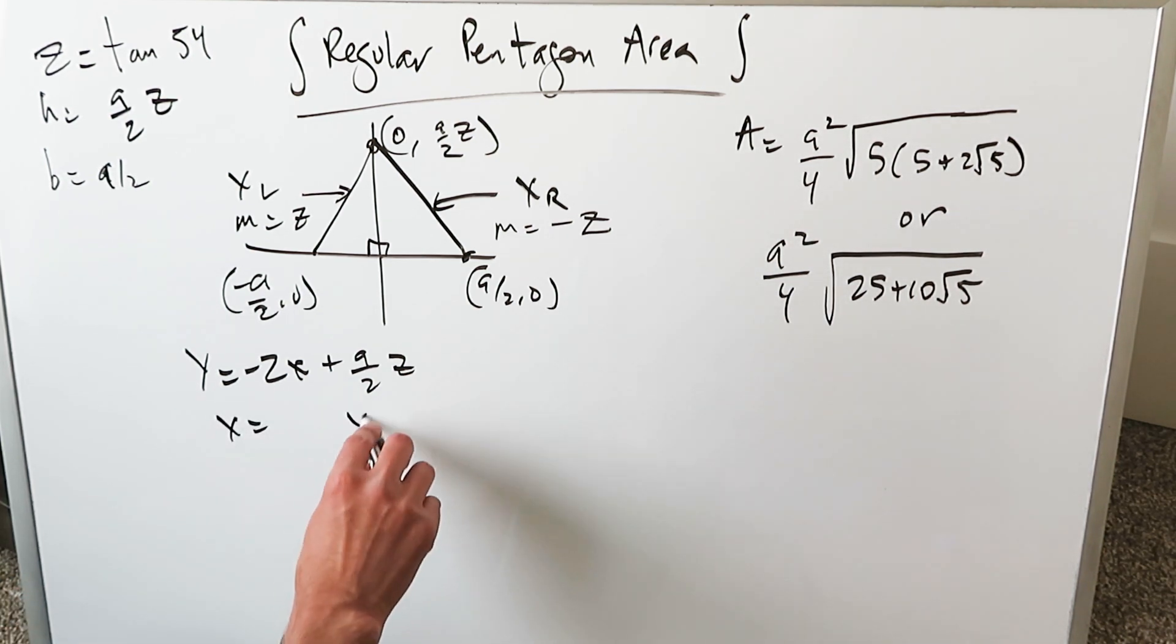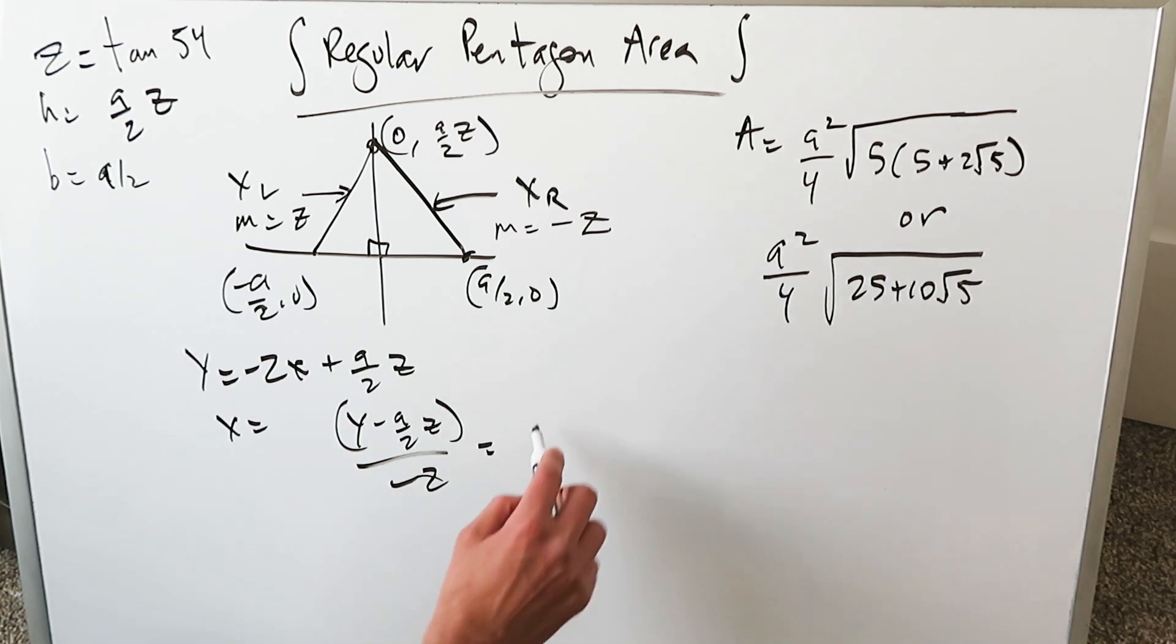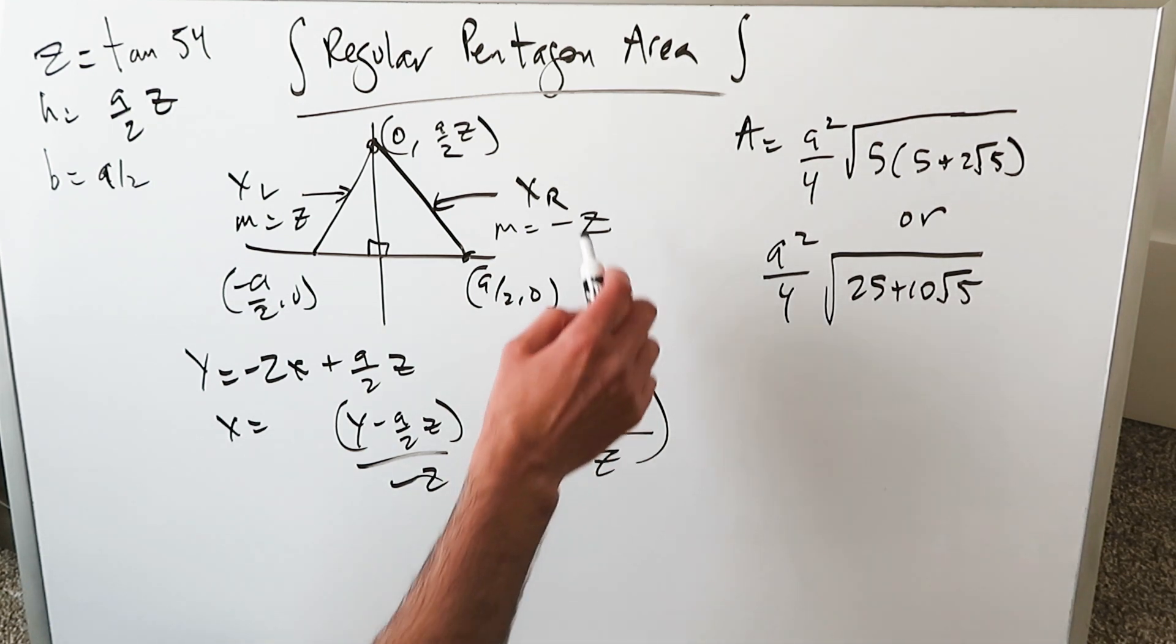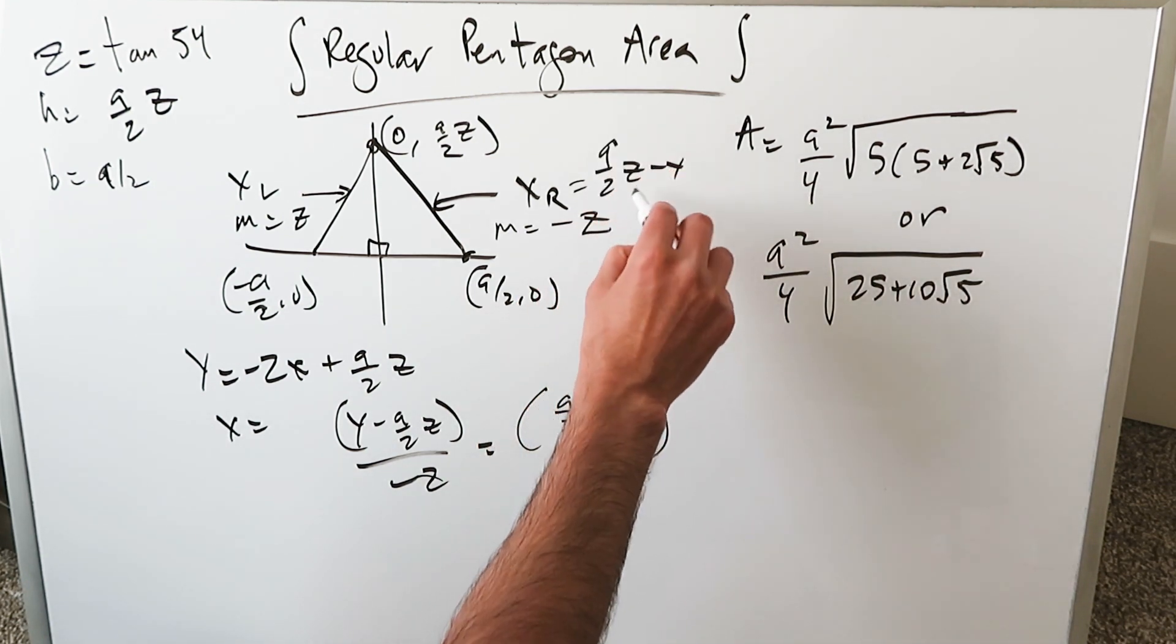X is going to be equal to Y minus A over 2 Z divided by minus Z, which if you put the effect of the minus you're really looking at A over 2 Z minus Y divided by Z. That's your right boundary curve and we'll put it right here. A over 2 Z minus Y divided by Z.